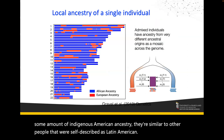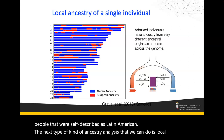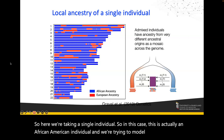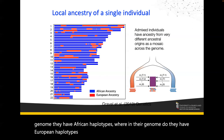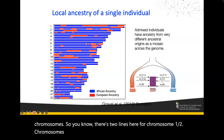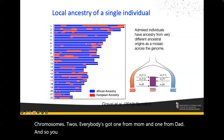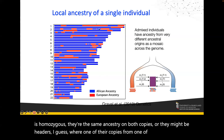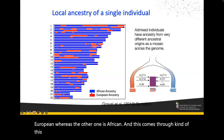The next type of ancestry analysis is local ancestry. Here we take a single individual — in this case an African-American individual — and try to model where in the genome they have African haplotypes versus European haplotypes. Each of these lines represents one of their two chromosomes — one from mom, one from dad — for each chromosome. At various different points, this individual is either homozygous for the same ancestry on both copies, or heterozygous where one copy is European and the other is African. This comes through the process of admixture.